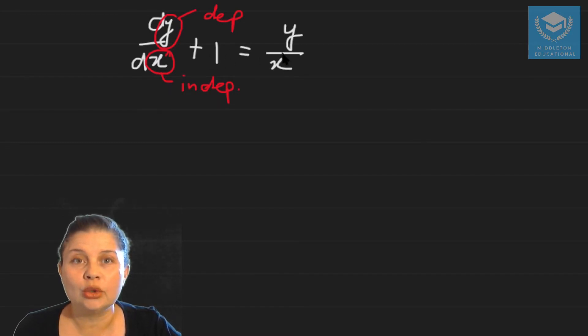Then if you check your dependent variable you will see that it is in only one place and it is to the power of one, which means that you have a linear differential equation.